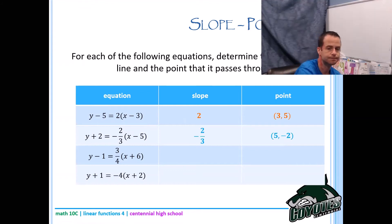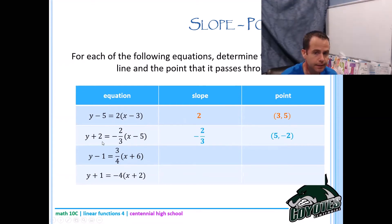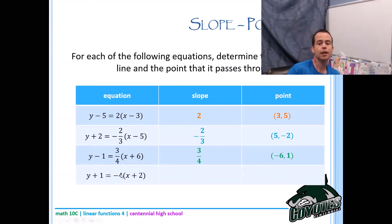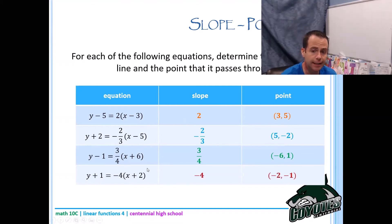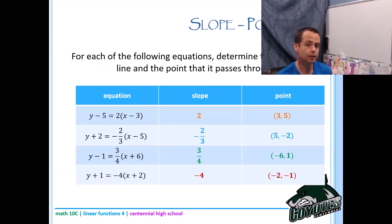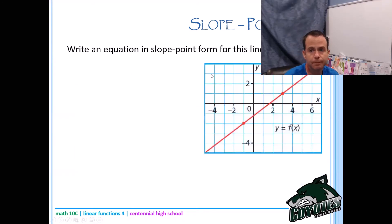For the next two: the slope is 3 over 4 and the point is negative 6 comma positive 1. Then slope is negative 4 and the point is negative 2 comma negative 1. Remember x always goes first, and it's always x minus x1 and y minus y1.